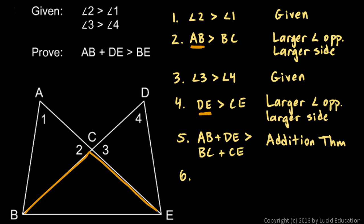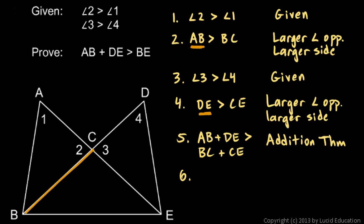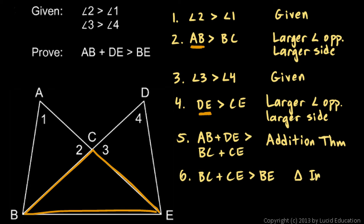Step six: these two sides must be bigger than BE. Looking at this bottom triangle BCE, any two sides must add up to be more than the third. So BC plus CE must be more than BE — BC plus CE is greater than BE. The reason is the triangle inequality theorem: any two sides of a triangle must add up to be more than the third.